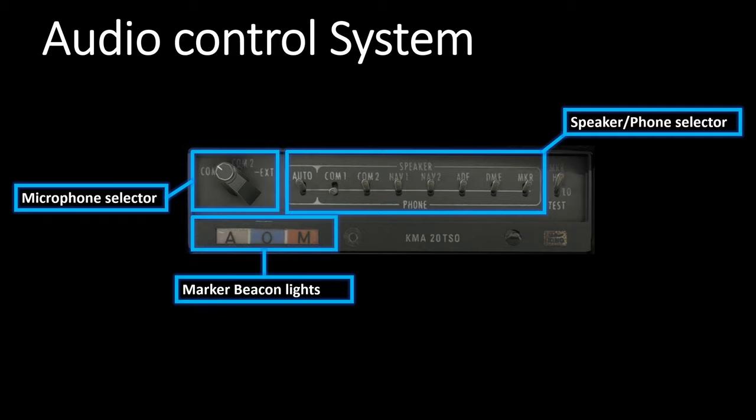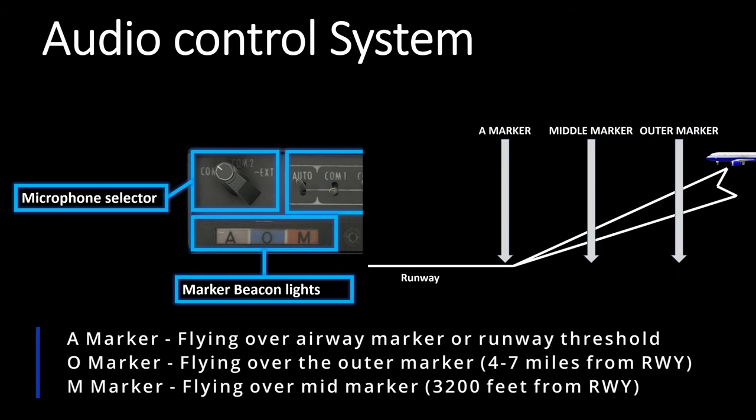Now let's talk about the marker beacon receiver. There are three lights noted with letters A, O, and M. The A marker light will illuminate if you're traveling over an airway marker or a runway threshold. The O marker light will illuminate when the airplane is passing over the outer marker, which is usually about four to seven miles from the runway threshold. The M marker light will illuminate when the airplane is passing over the middle marker, which is usually about 3,200 feet from the runway.